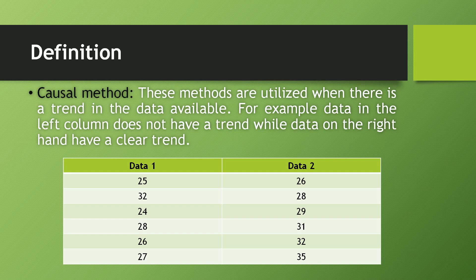But if you see the data on the right column which is 26, 28, 29, 31, 32 and 35, you can clearly observe there is a trend, there is an increasing trend in the data. So if we have to find out the forecast demand for the upcoming period, then it should be greater than 35.